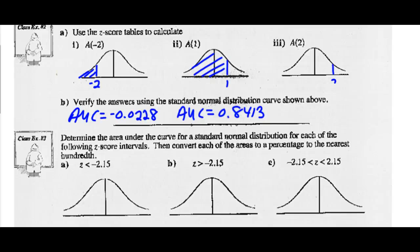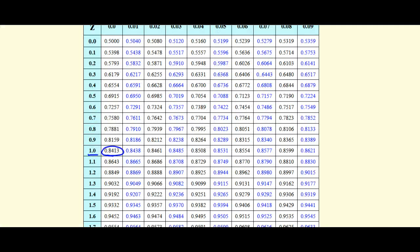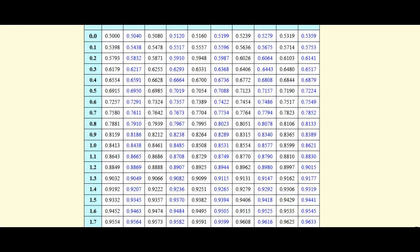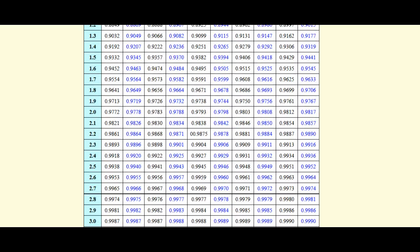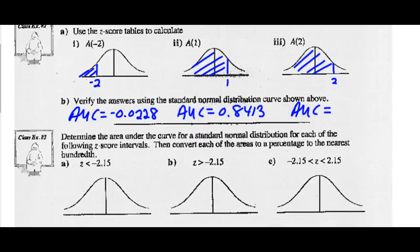Area under the curve with a Z-score of 2. We shade left of that and find the area under the curve. Going to our Z-score table, looking up 2.00, that is 0.9772. So this area under the curve for Z less than 2 is 0.9772.